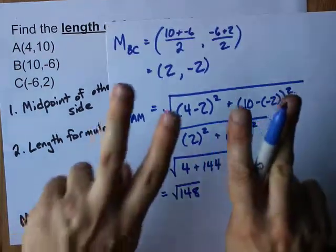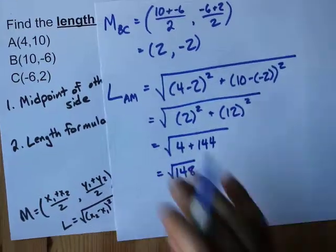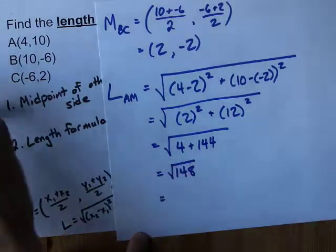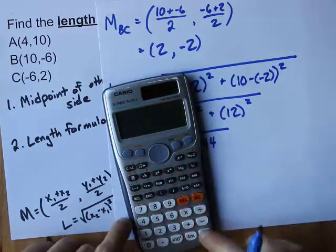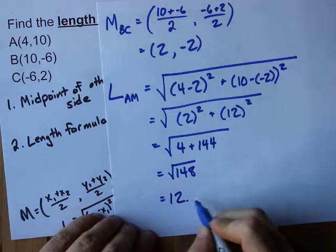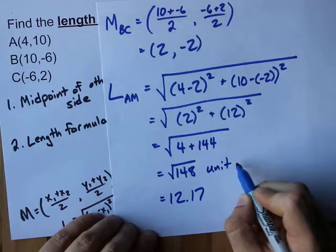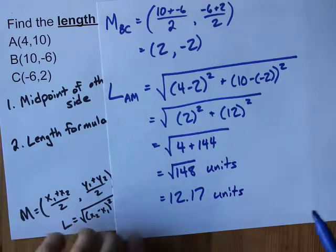If your teacher wants an exact answer, it's root 148 units. If your teacher wants an approximate answer, you plug it into your calculator. Root 148 is 12.17 approximately. You can say root 148 units long or 12.17 units long.